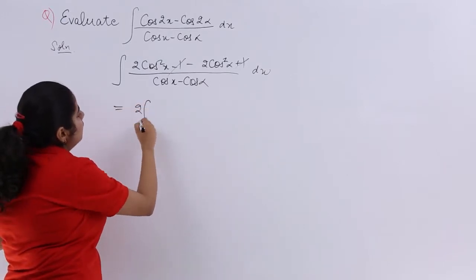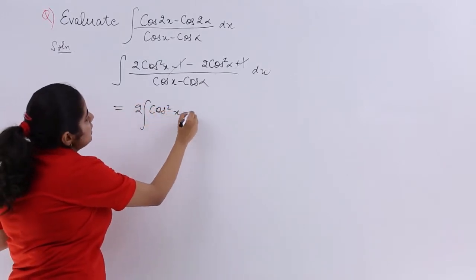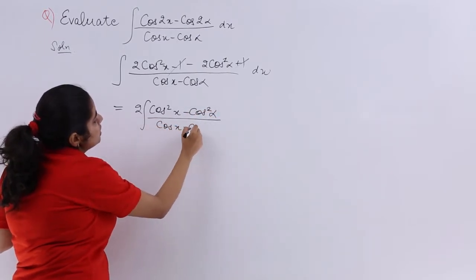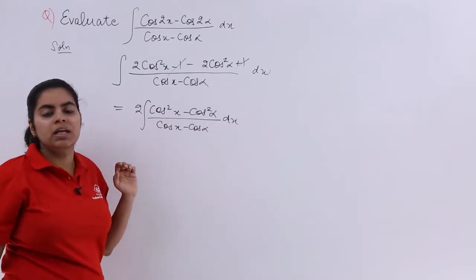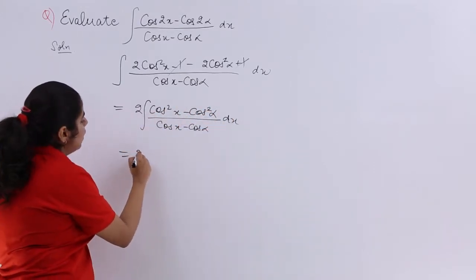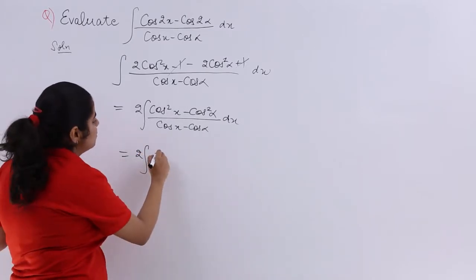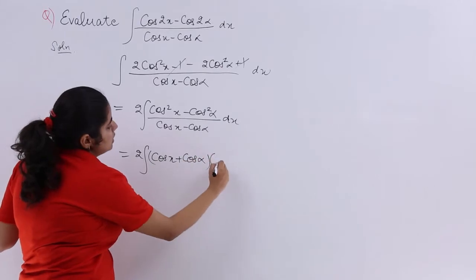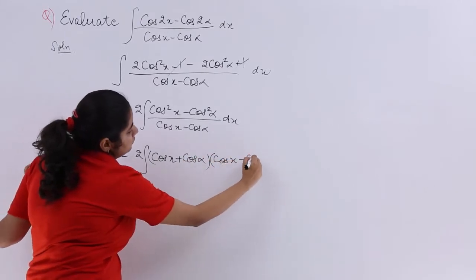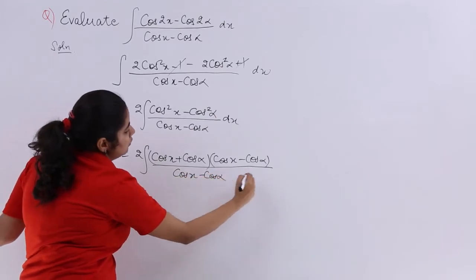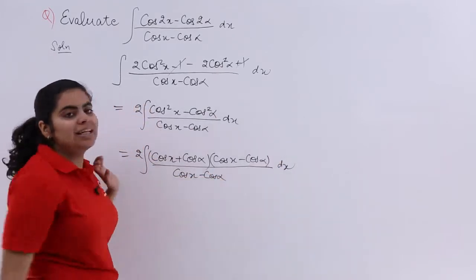The next step: take 2 common, and it becomes 2 times cos²x minus cos²alpha over cosx minus cosalpha, dx. Now we use a² minus b², which factors as (a minus b)(a plus b). So it becomes cosx minus cosalpha times cosx plus cosalpha in the numerator, with cosx minus cosalpha in the denominator, and dx.